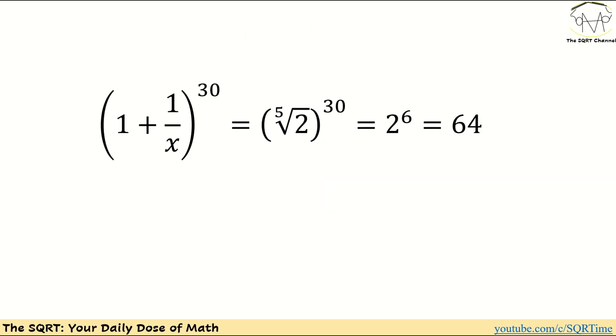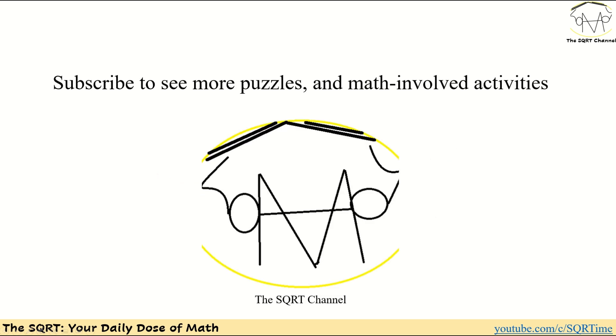To do this, remember what we wanted to find is power of 30 of the expression that we already found. And to find it I'm going to write the fifth root of two as two to the power of one over five and then power of 30 of this is going to be two to the power of six which is basically 64 and we already have it here.